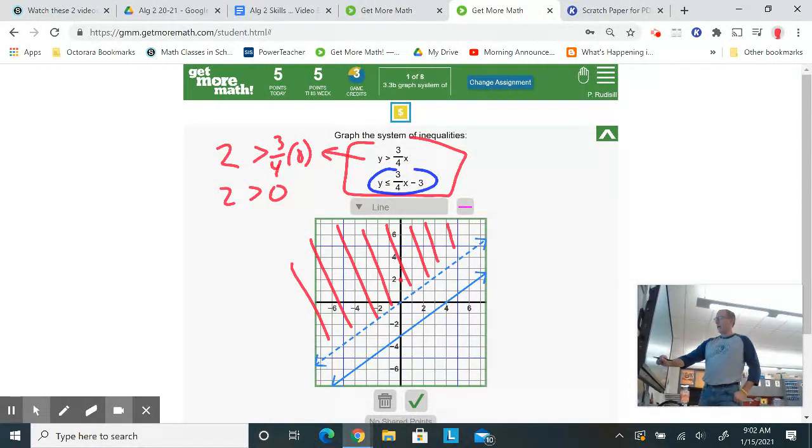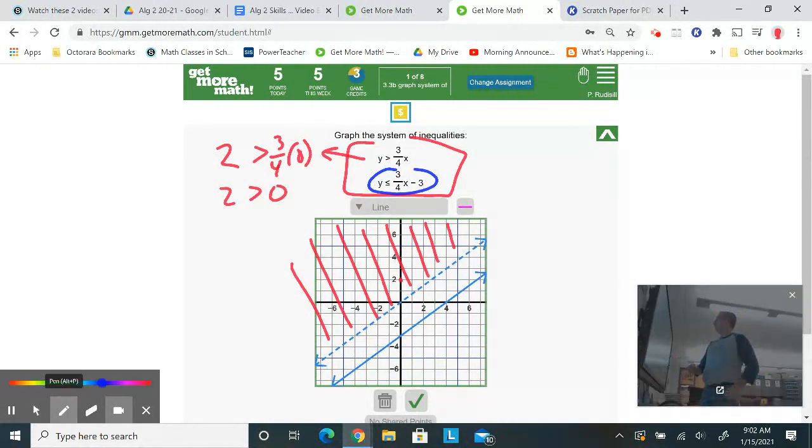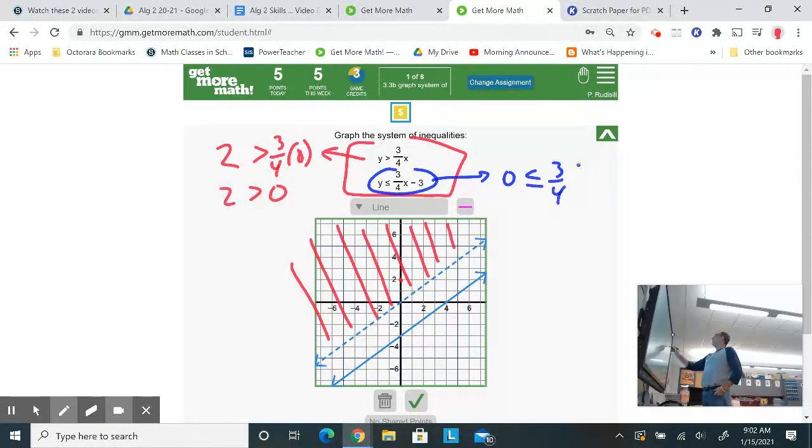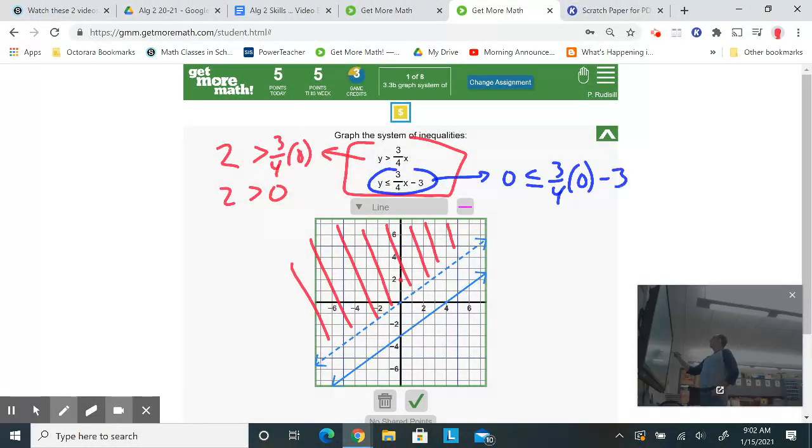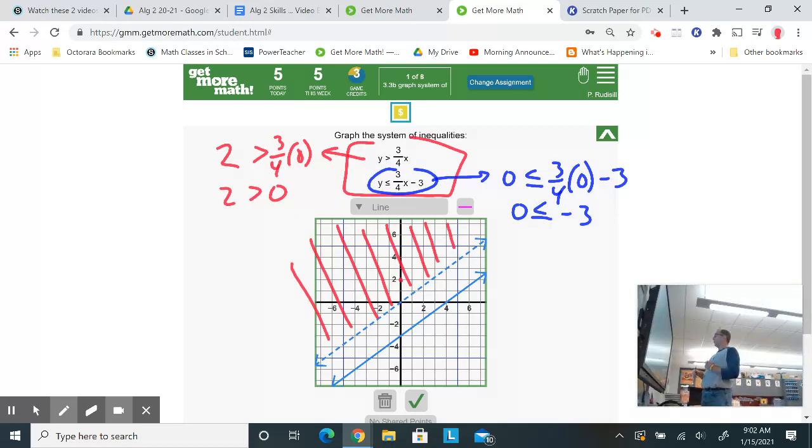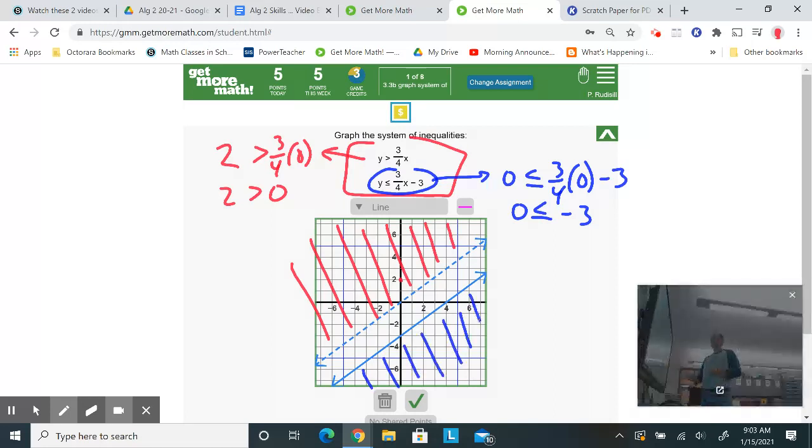And I want to see which way to shade. So I'm going to grab my pen tool with blue. And I'm going to substitute in zero for y. I'm going to test zero, zero. And we're going to put a zero in for x. And zero times three-fourths is zero. Zero minus three is negative three. Is zero less than negative three? Zero is greater than negative three. So zero doesn't work. So I would shade in the opposite direction.